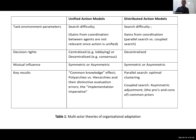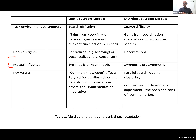I want to take a few more minutes to talk about the distinction between centralization or decentralization of decision rights, and the structure of mutual influence among actors — whether it's symmetric or asymmetric. While these appear as different rows in the table, there's a deep connection between them: in the limit, maximal asymmetric influence is identical to centralization of decision rights.